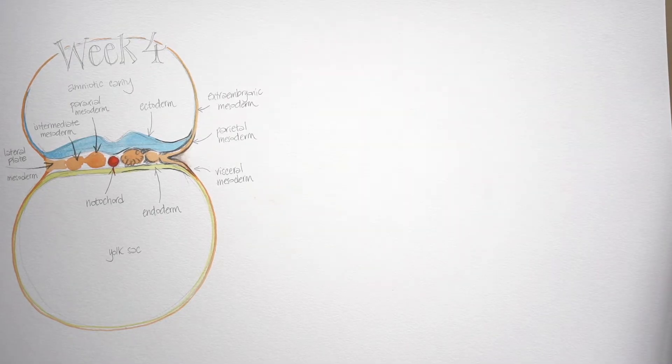Then in the center of this embryo is the notochord, that rod that forms from tissue that's turning in on itself at the primitive pit. And that rod is now starting to talk to the overlying ectoderm.